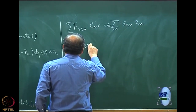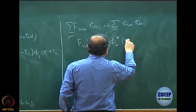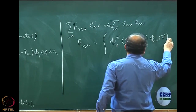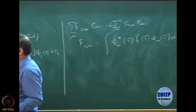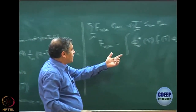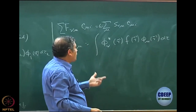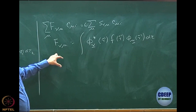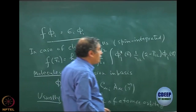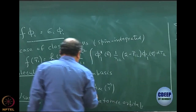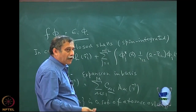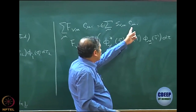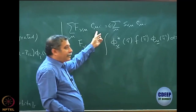Here F_νμ is the matrix element of the Fock operator: F_νμ = ∫ χ_ν*(r) f(r) χ_μ(r) dτ. This is an M×M matrix. The C_μi coefficients are the expansion of the i-th molecular orbital in terms of the μ-th atomic orbital — in simple chemistry notation, C_μi is the contribution of the μ-th atomic orbital to the i-th molecular orbital.